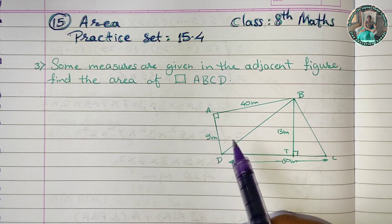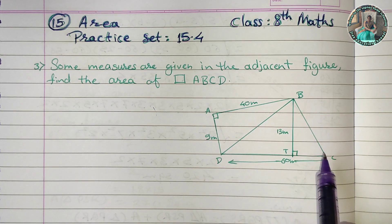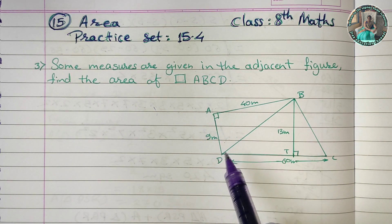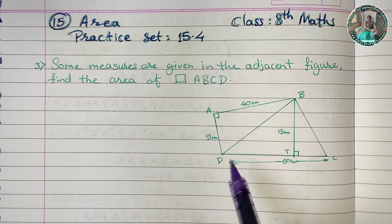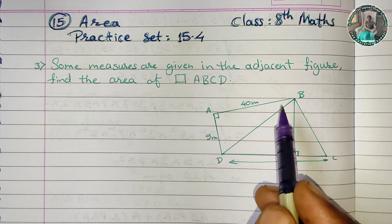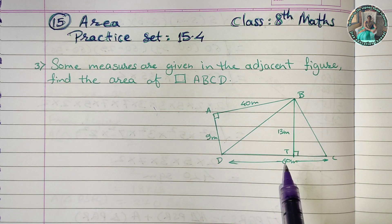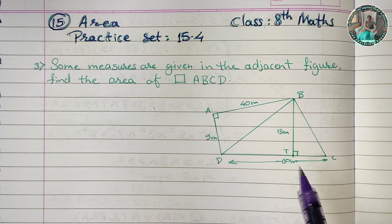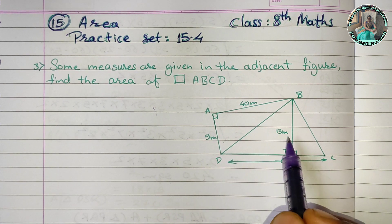The second area is triangle CBD. The base is DC. The height in front is BT, which is 13 meters. So these are two triangles.